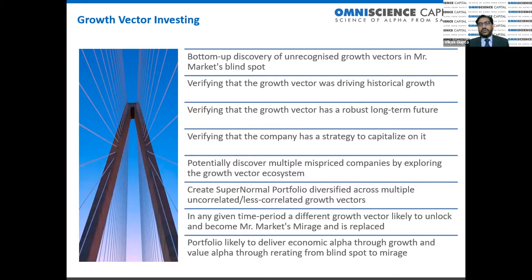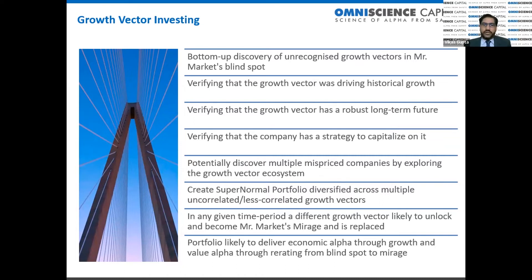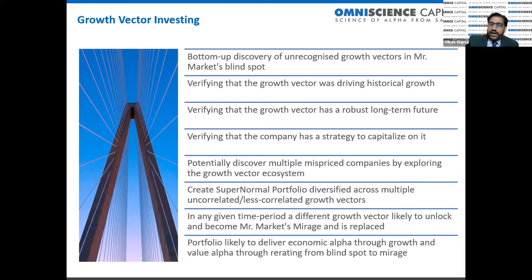With six growth vectors and a three-year investment horizon, because they are independent, roughly every six months one growth vector would unlock and you'd make profits and exit, replacing it with another. The two ways you make returns: first, higher growth rate generates economic alpha with higher return on capital; and second, re-rating as the stock goes from Mr. Market's blind spot to Mr. Market's mirage — that's a huge value-creating alpha.